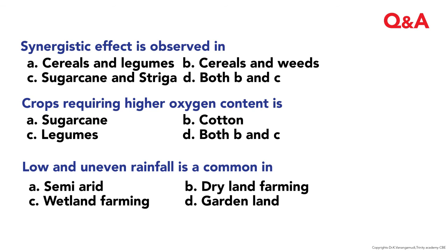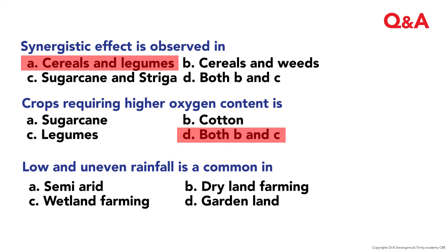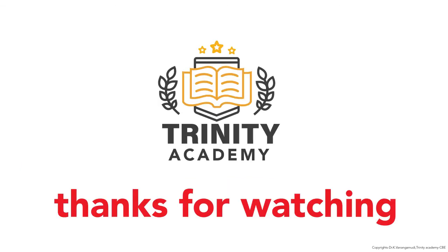Review questions: The synergistic effect is observed in cereals and legumes — that is the correct answer. Crops requiring higher oxygen content are cotton and legumes. Low and uneven rainfall is common in dryland farming. With this, we complete the first chapter. Kindly subscribe to the channel. Thank you very much.